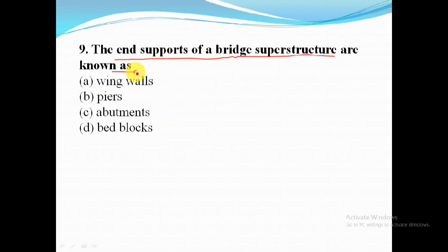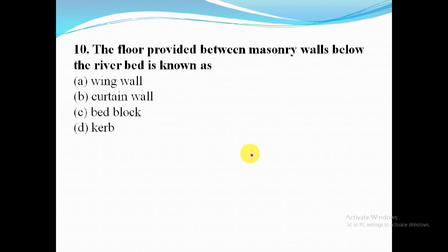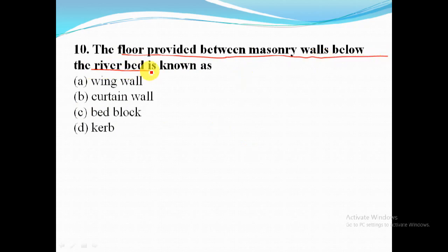The end supports of a bridge superstructure are known as abutments. The floor provided between masonry wall below the river bed is known as curtain wall.